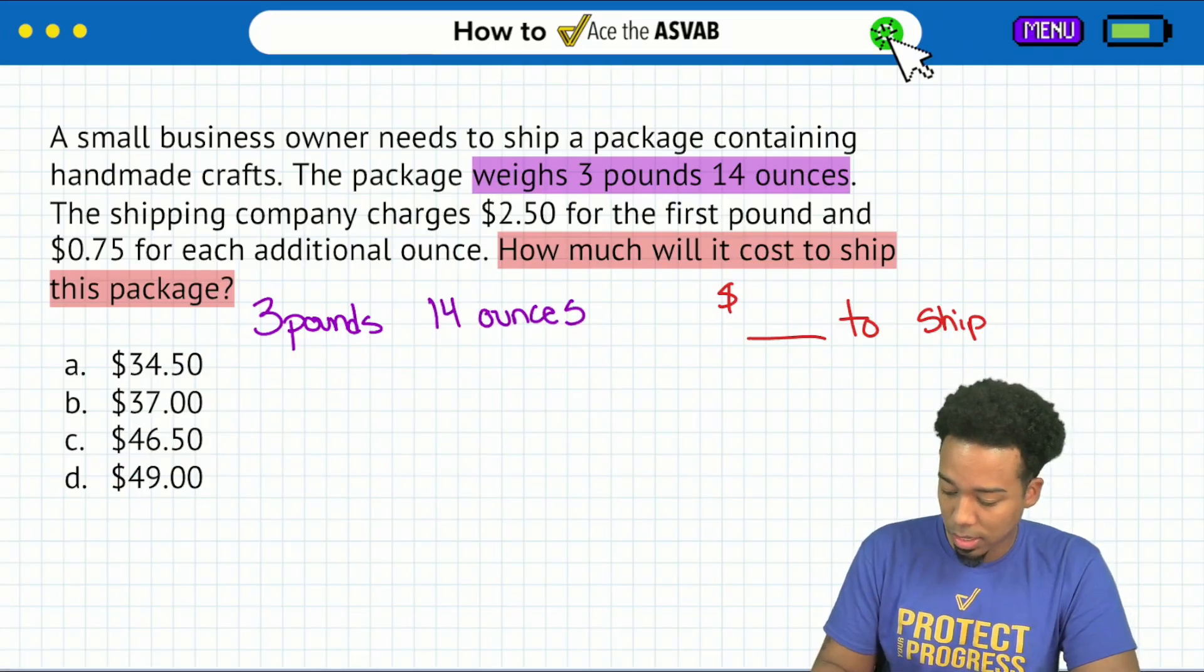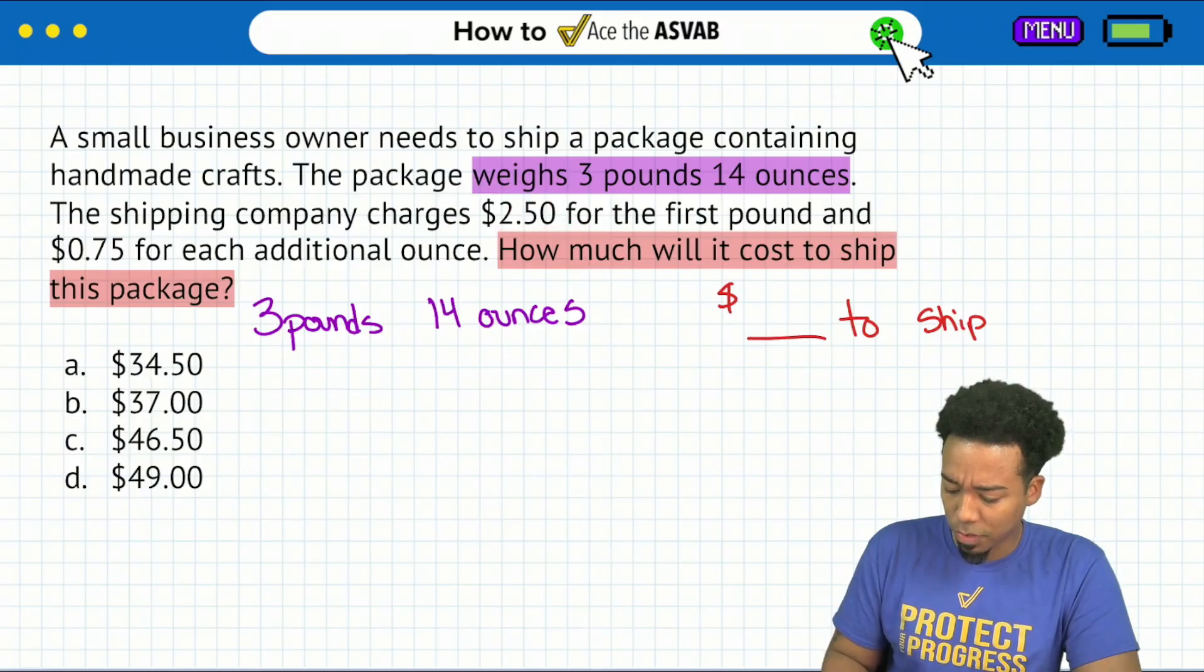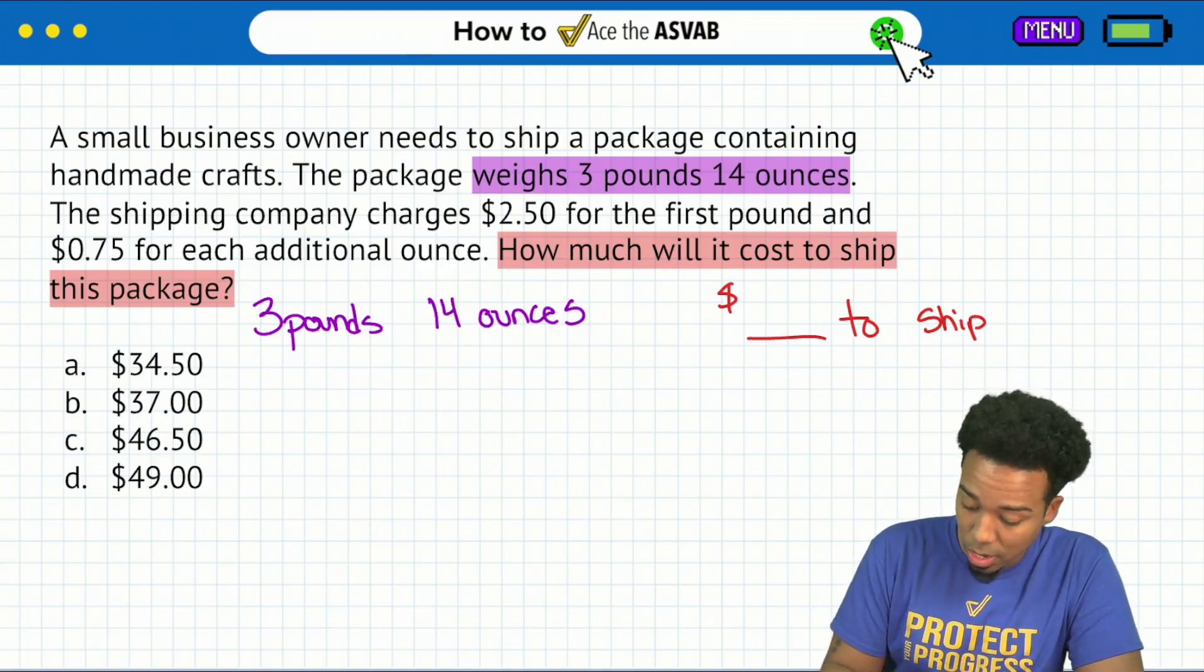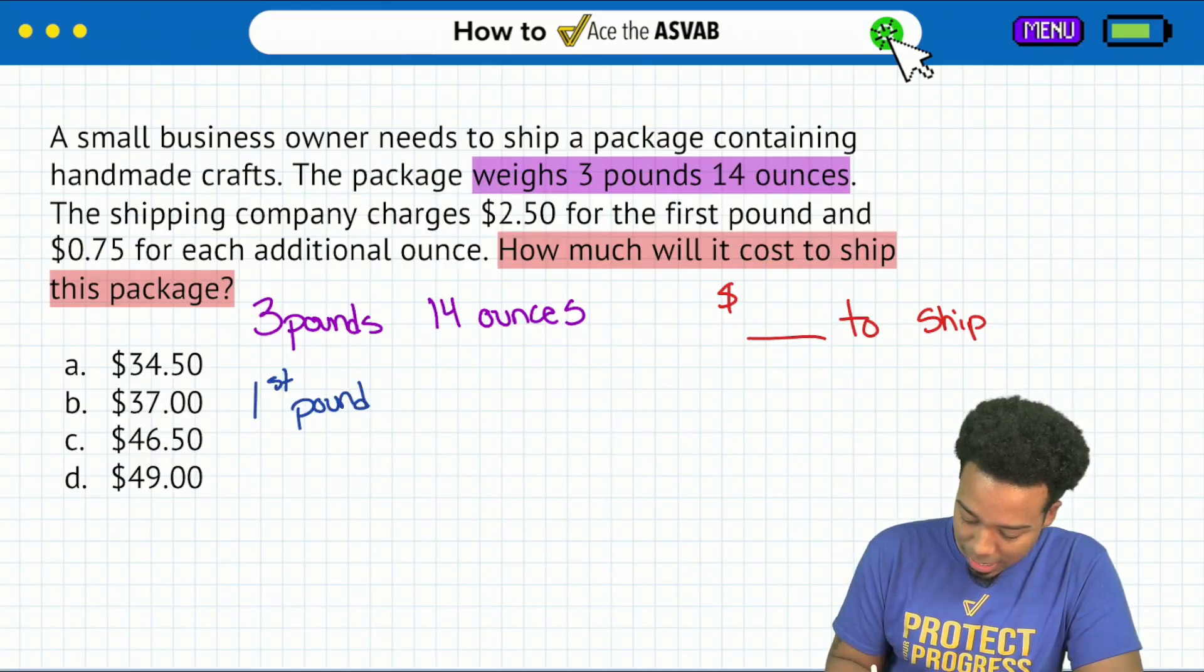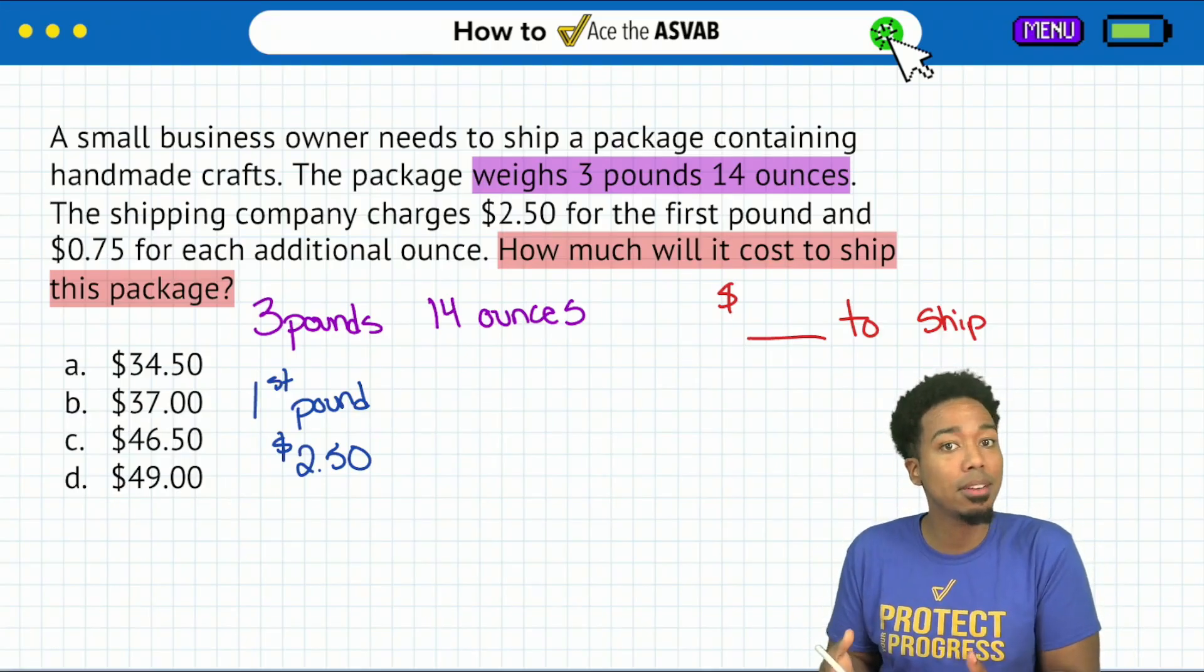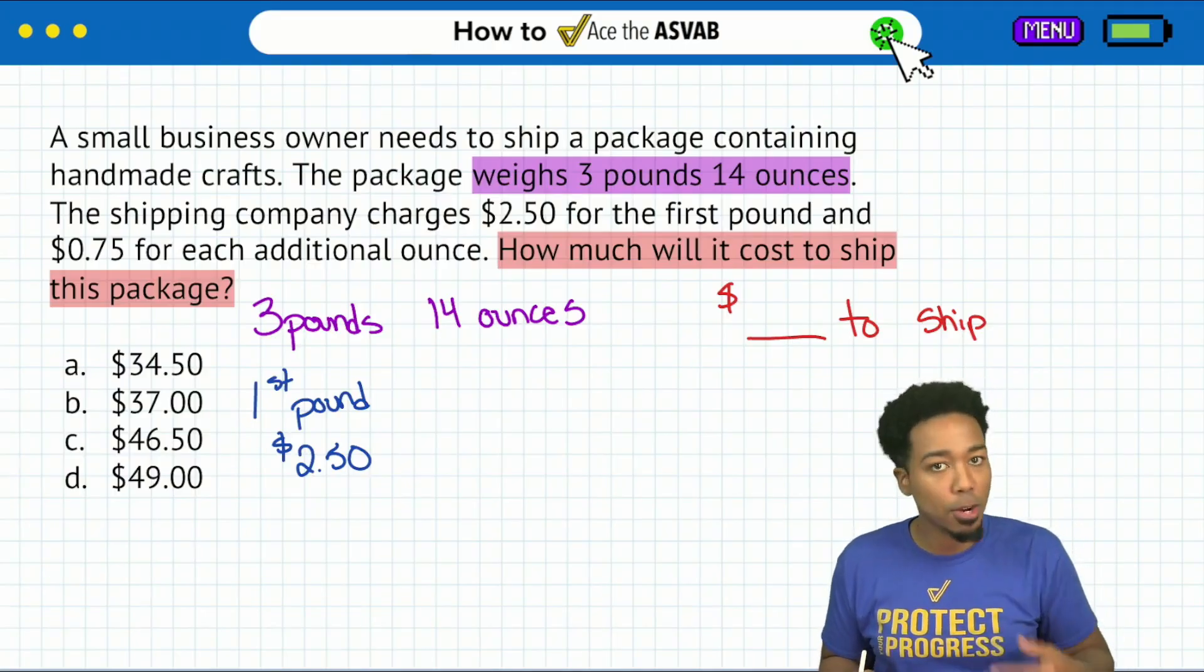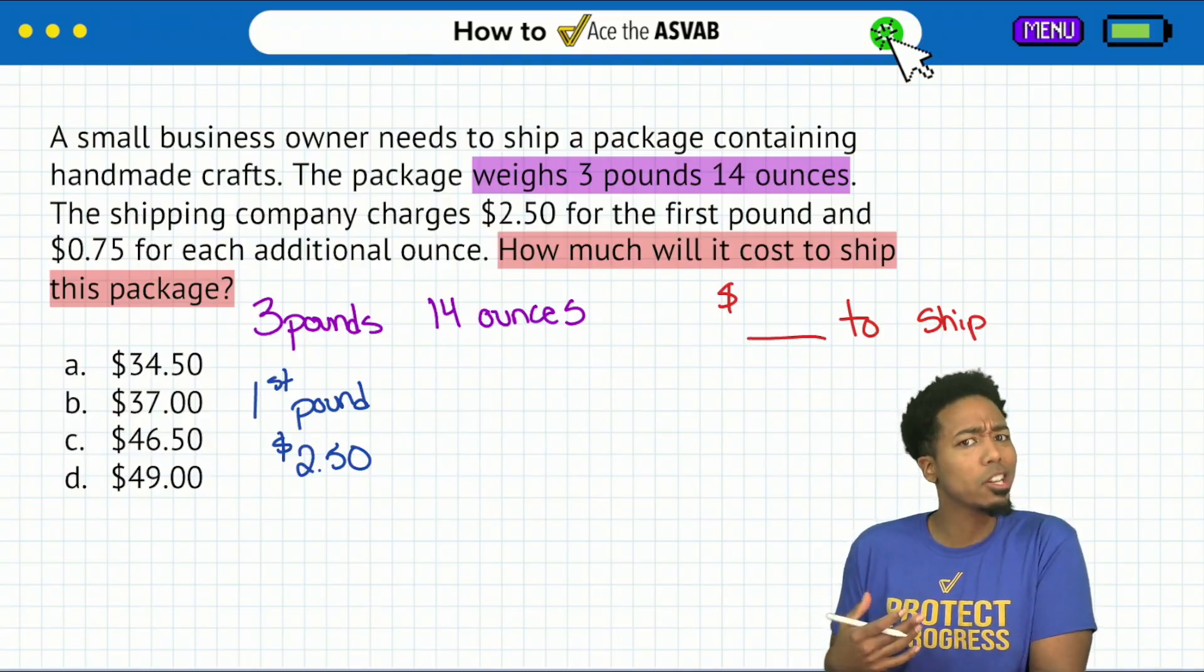So here, a small business owner needs to ship a package containing handmade crafts. The package weighs 3 pounds 14 ounces. The shipping company charges $2.50 for the first pound and 75 cents for each additional ounce. Alright. Sounds good. So we have the information we need. Let's go ahead and write it out so we understand what's going on. So number one, right over here, I'll go ahead and say we have the weight of the package, 3 pounds 14 ounces.